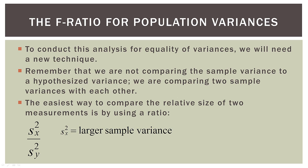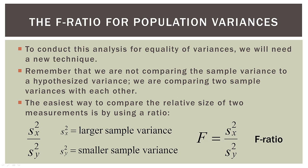Now the way we arrange this in the F ratio is that the larger sample variance of the two goes in the numerator, and then the smaller sample variance goes in the denominator. It doesn't matter what we call machine one or machine two — where they go in the ratio depends on their size. So in the numerator at the top, it's the larger of the two, and in the bottom, it's the smaller of the two. This is the F ratio.